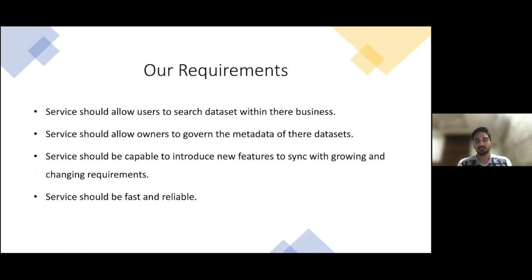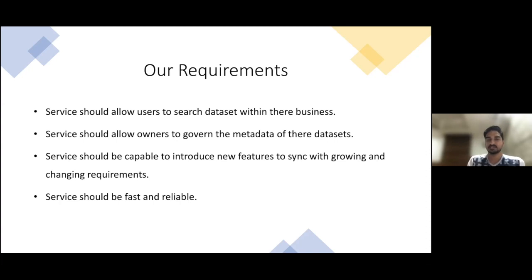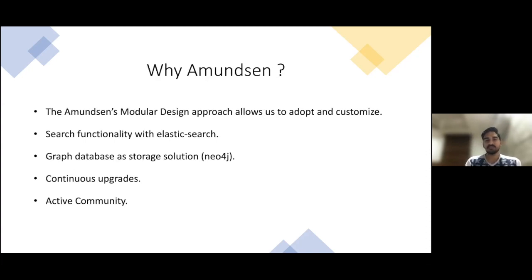The service should also be capable of introducing new features, since we provide data discovery as a solution to different businesses and there may be different requirements, new features, or changes needed. The service should also be fast and reliable to provide a better user experience. That's where Simpress started investigating whether to implement everything from scratch or use an open source project to avoid spending time implementing core functionality. We started comparing different open source cataloging services, and there were key points that helped us finalize on Amundsen.